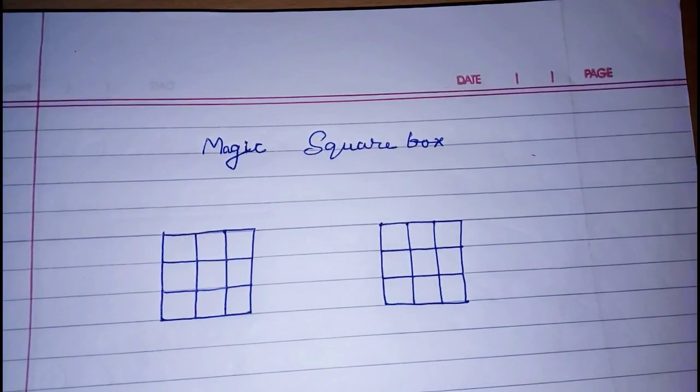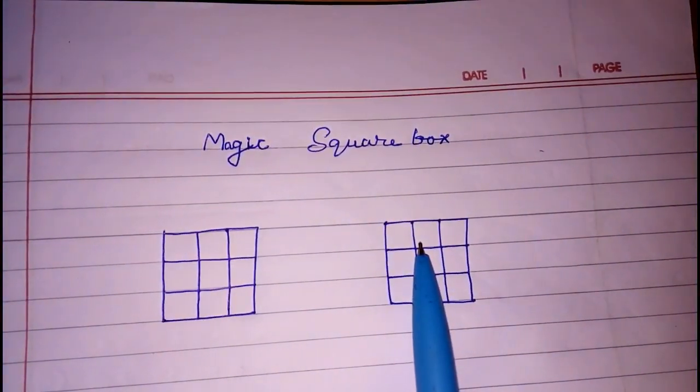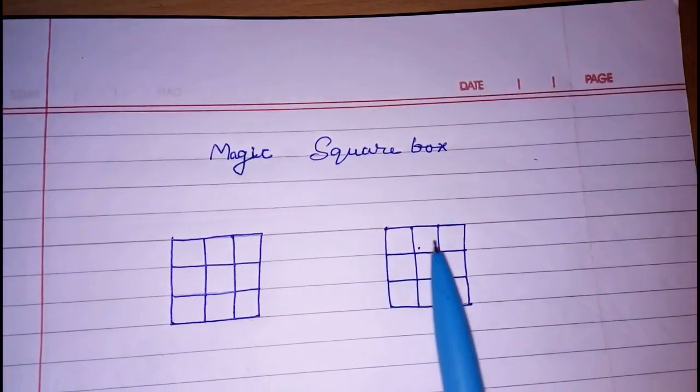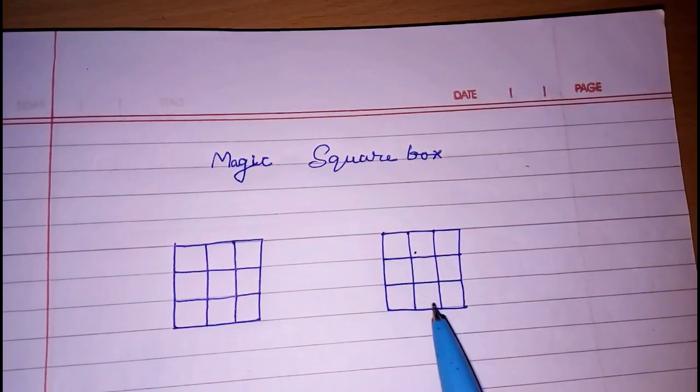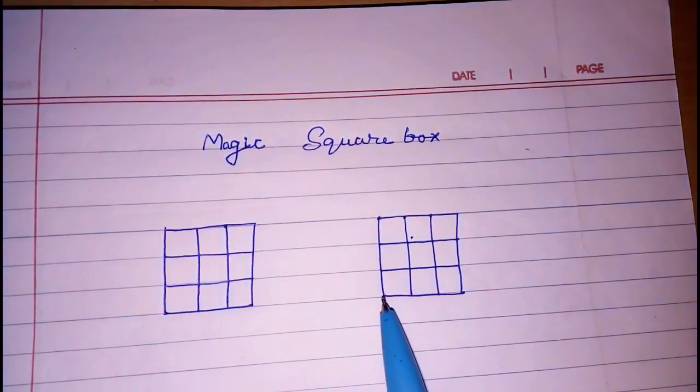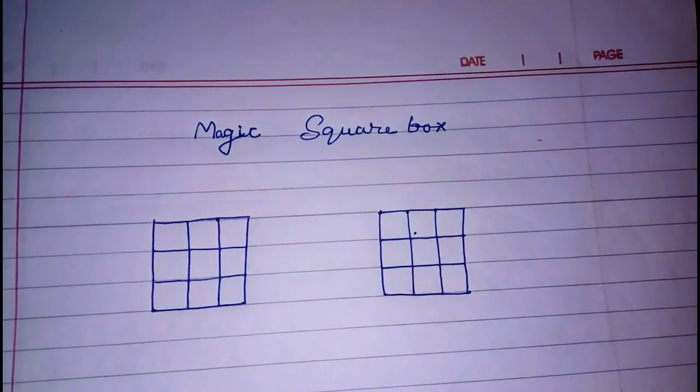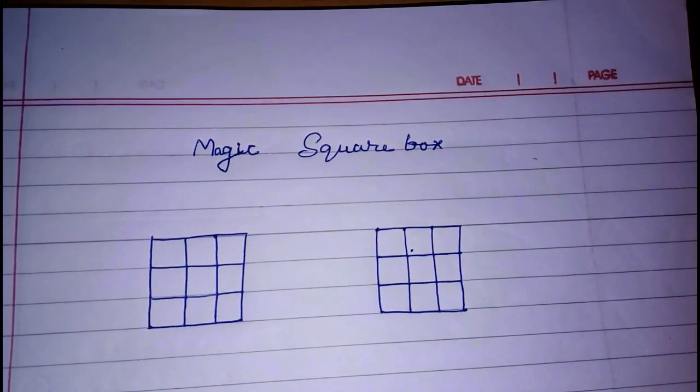Any consecutive nine numbers in this box such that the sum of all the numbers horizontally, vertically, or diagonally remains the same or we will get equal answers if we add all these numbers.